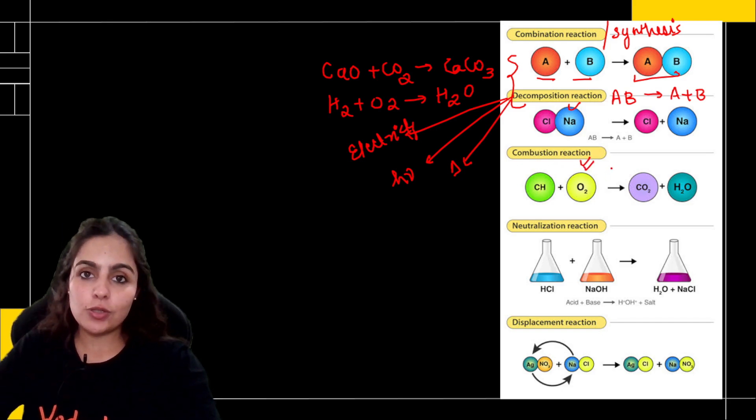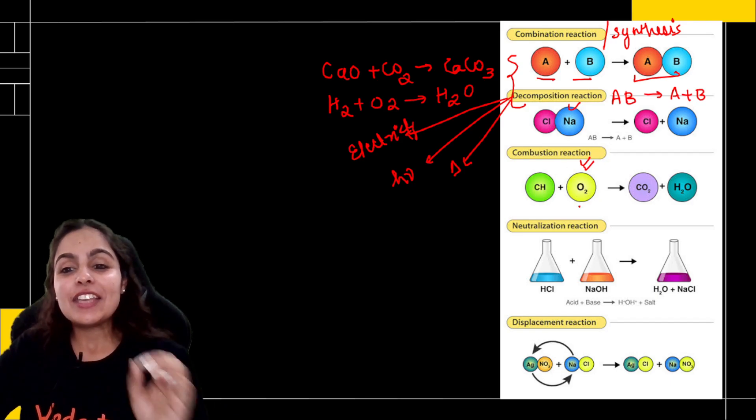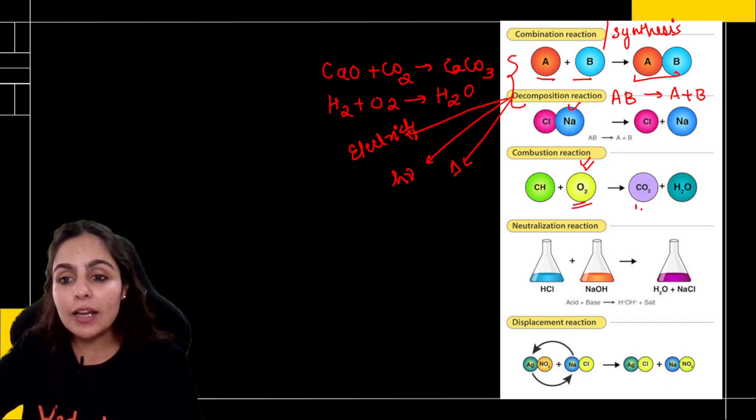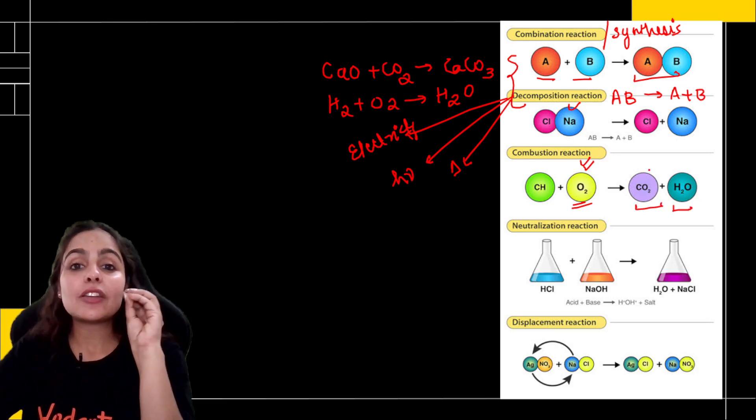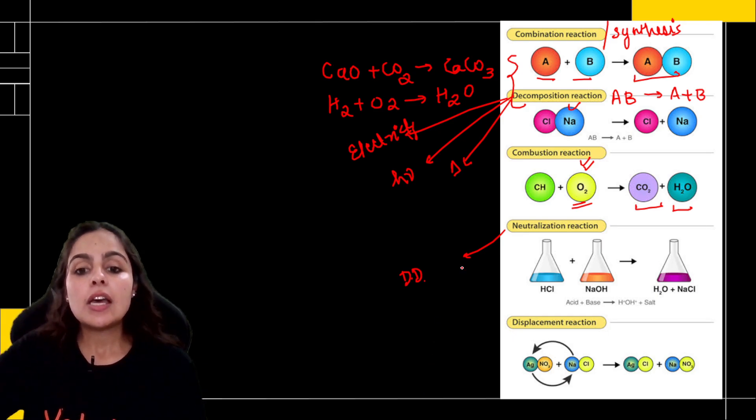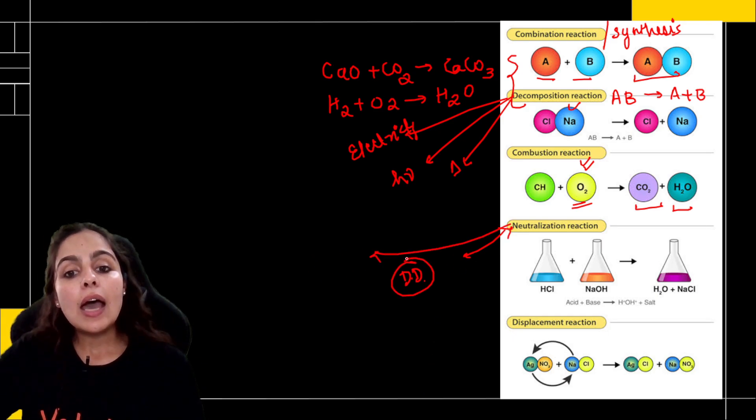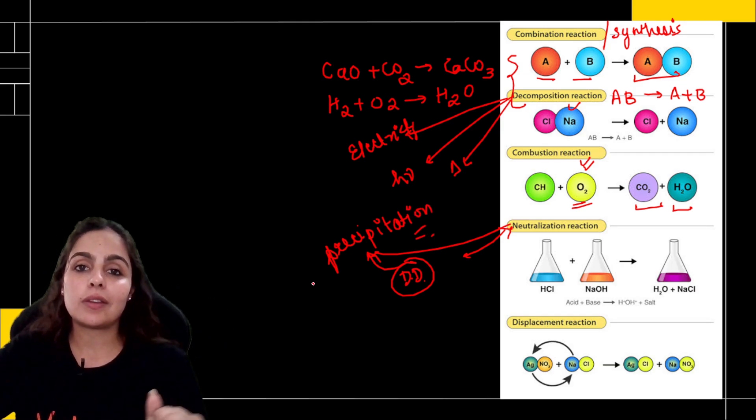Decomposition happens in presence of various conditions. I would say decomposition are very demanding reactions. They require heat also to decompose. They also require sunlight. And some reactants need electricity to decompose and make a new product. Next, comes combustion reaction. Combustion means burning. Here methane is burned in presence of oxygen so that will give you carbon dioxide and water. Combustion reactions are the simplest reactions ever that you've seen. Neutralization is a part of double displacement reaction.